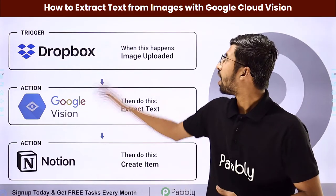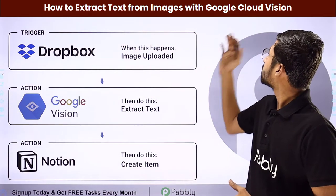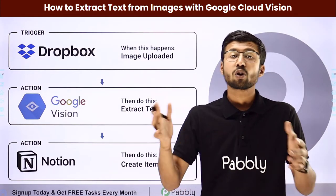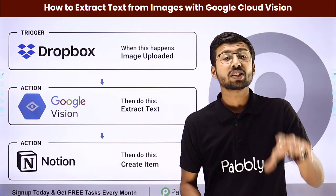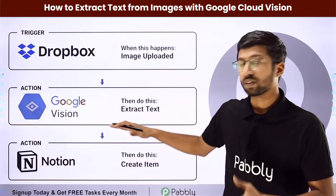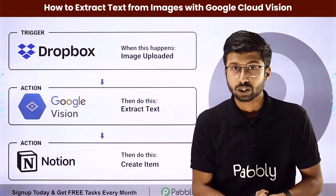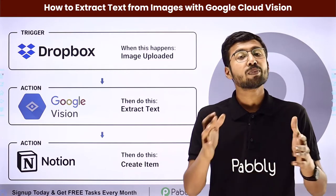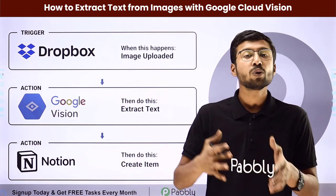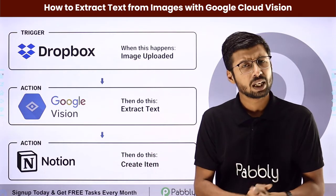In this video, we will learn how to extract text from images with Google Cloud Vision. Suppose you have lots and lots of images and you want to extract the text in those images using Google Cloud Vision, which is an amazing application from Google. You can completely automate the process of extracting text and adding those text details in some application, for example, like Notion.